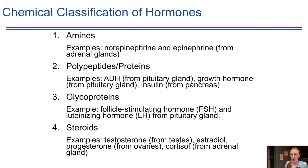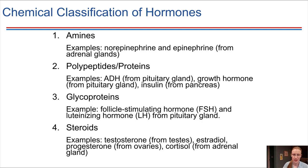Third, glycoproteins — a protein with a carbohydrate attached to it. A good example of a glycoprotein hormone is any of the gonadotropic hormones that we'll be going over. And finally, steroids, which have that distinctive ring structure. Steroids are a type of lipid that we saw back when we were talking about different types of chemical molecules. So we can classify based on chemical structure, or we could alternatively classify hormones based on their action — how they do what they do.